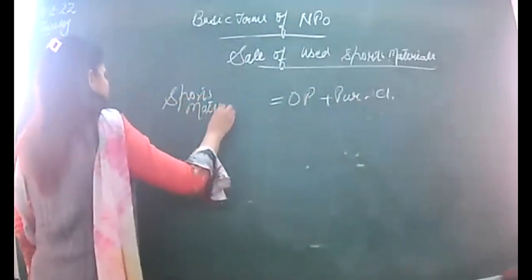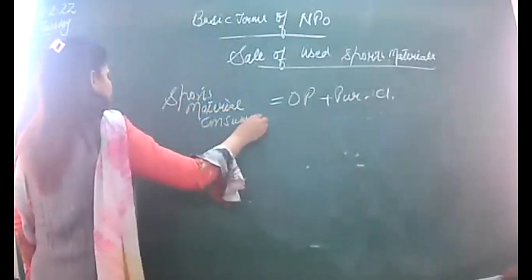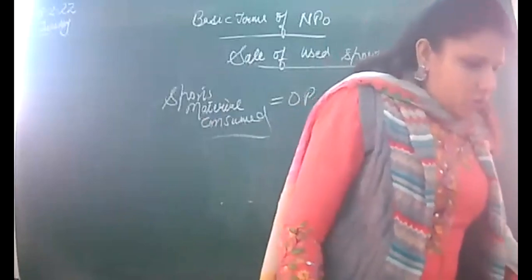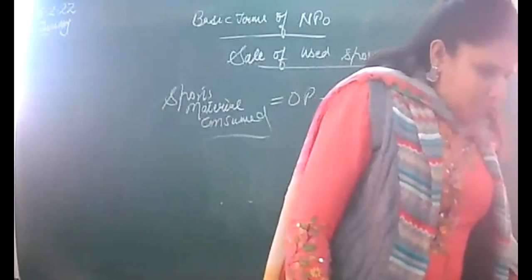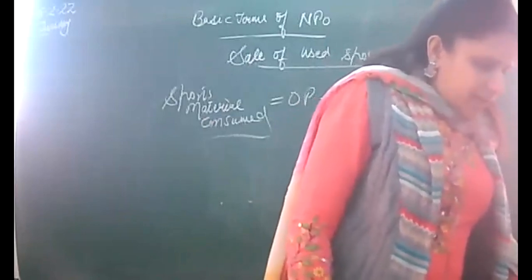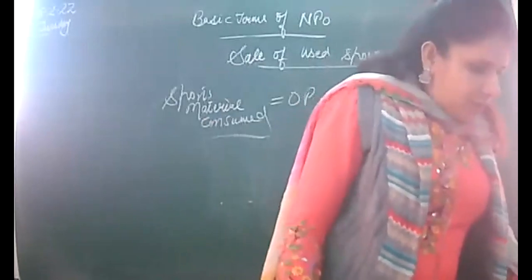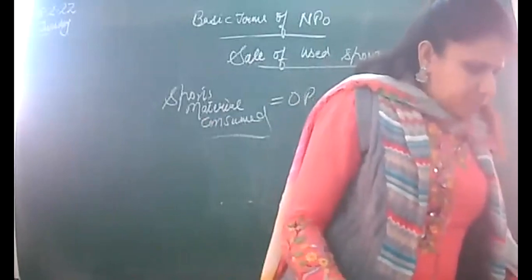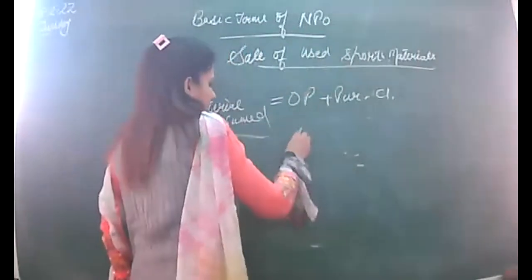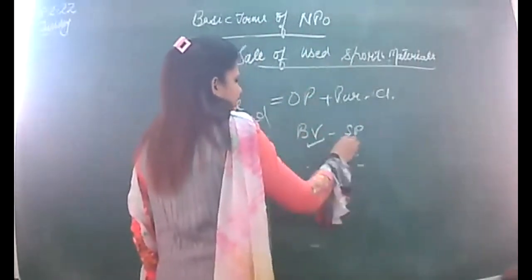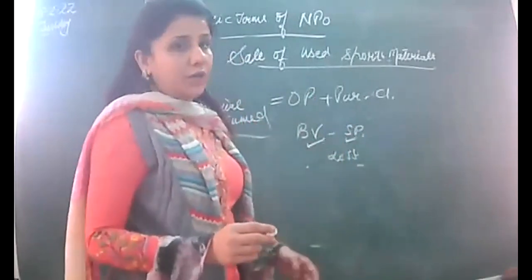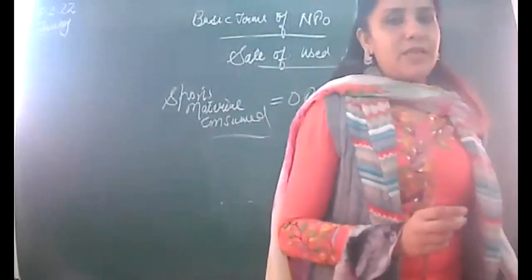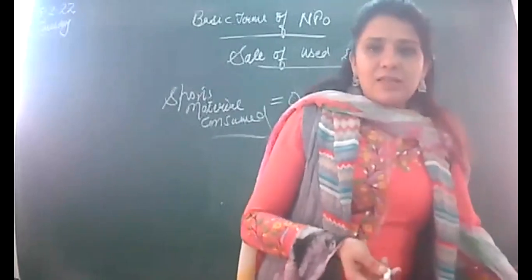The purchase of sports material is to be written on the debit side of your income and expenditure account as a real expenditure. If you have old sports material which is sold, the sale proceeds are credited to the income and expenditure account. You have to compare the book value and the selling price. If book value is greater and selling price is less, the loss is shown on the expenditure side. If there is a gain, you write gain on sale of sports material.